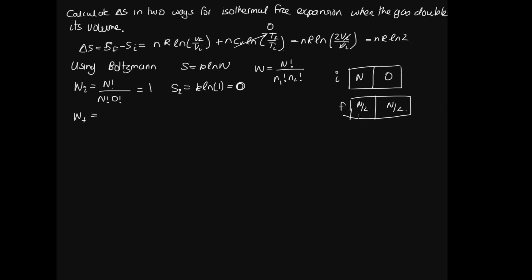The multiplicity of states for the final state, we've got N factorial over N on 2 factorial times N on 2 factorial. So substituting this in, the final entropy is going to be K log of N factorial over N on 2 factorial squared.